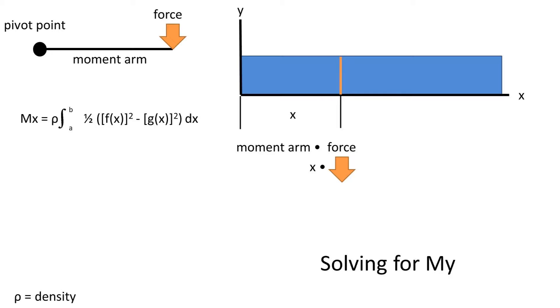we have thin slivers that are x distance away from the pivot point. So our x is the moment arm, and these small slivers are the force. The small slivers can be defined as density times the function at a given point on the x-axis, which is the length at a given point.